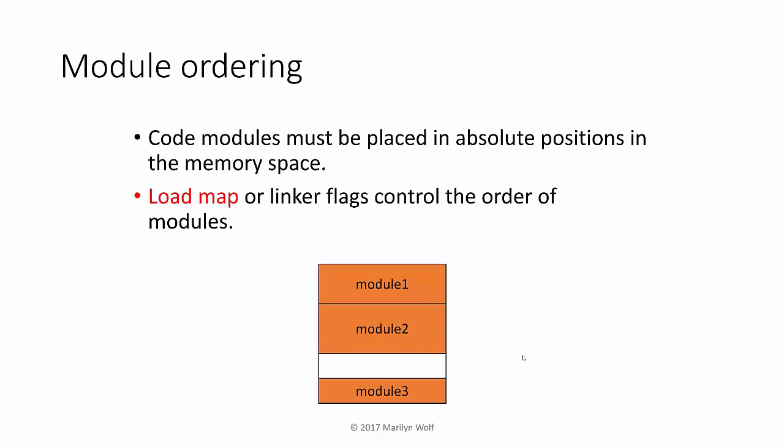The linker also determines where modules are placed in memory. In some cases we don't care exactly where a module goes, but in other cases — such as interrupt vector tables — we care a great deal. Machines with relative addressing may also put restrictions on how far an instruction can address from its own location, creating constraints on relative placement. The linker refers to a load map or linker flags for additional guidance, and the load map specifies where certain modules, like the interrupt vector table, should go in memory.